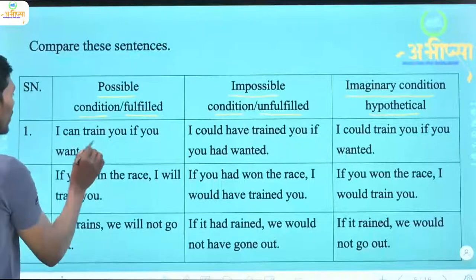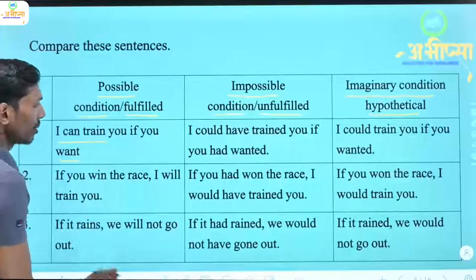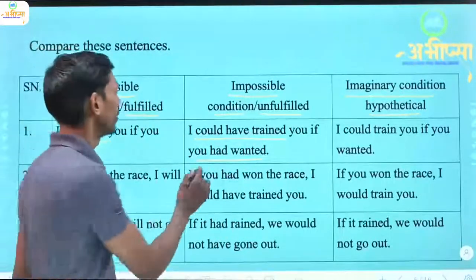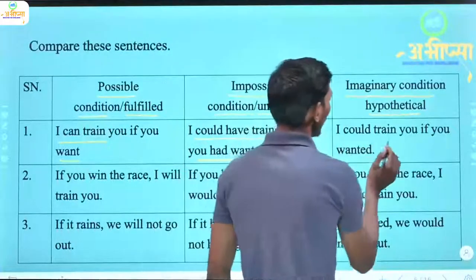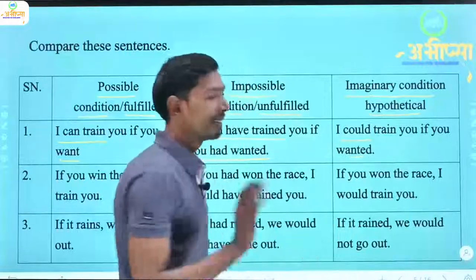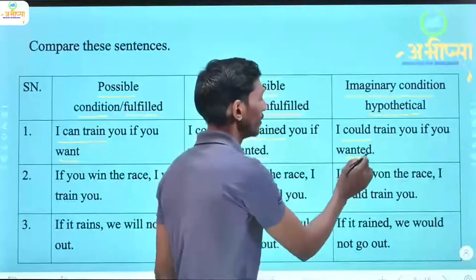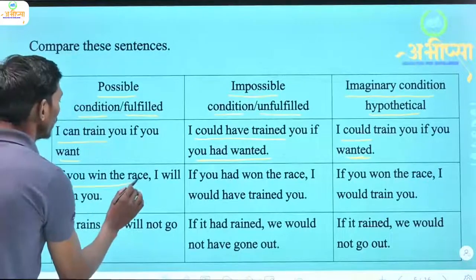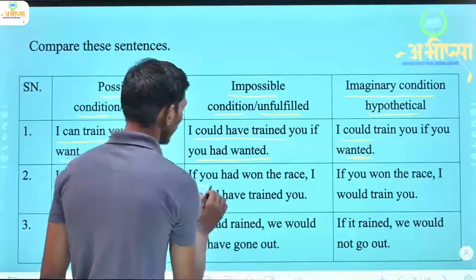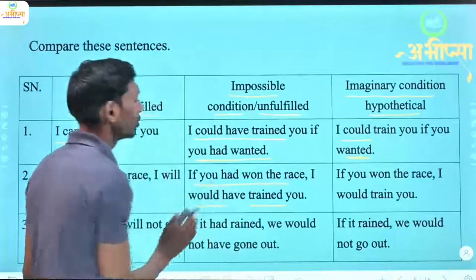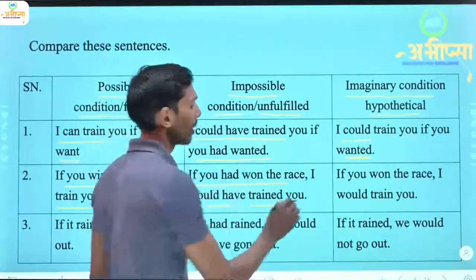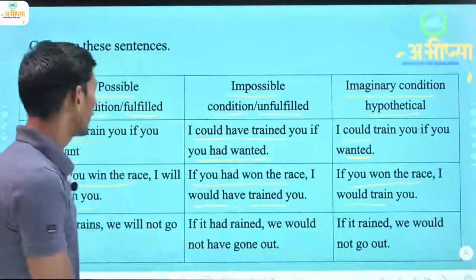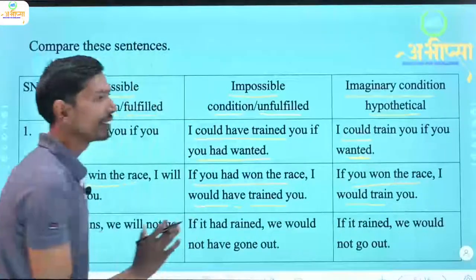Examples: 'I can train you if you want.' (possible) / 'I could have trained you if you had wanted.' (impossible/past) / 'I could train you if you wanted.' (imaginary) Similarly, 'If you win the race, I will train you.' / 'If you had won the race, I would have trained you.' / 'If you won the race, I would train you.' So, yaha pe possible, impossible, aur imaginary condition hai.